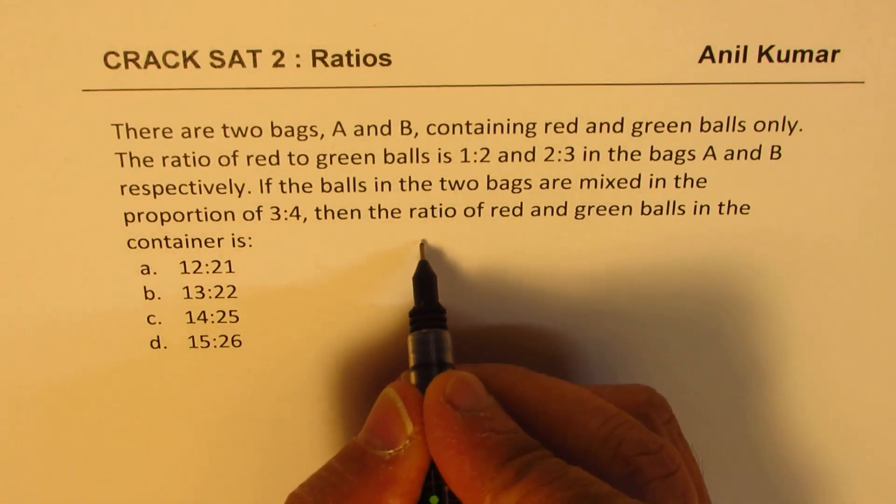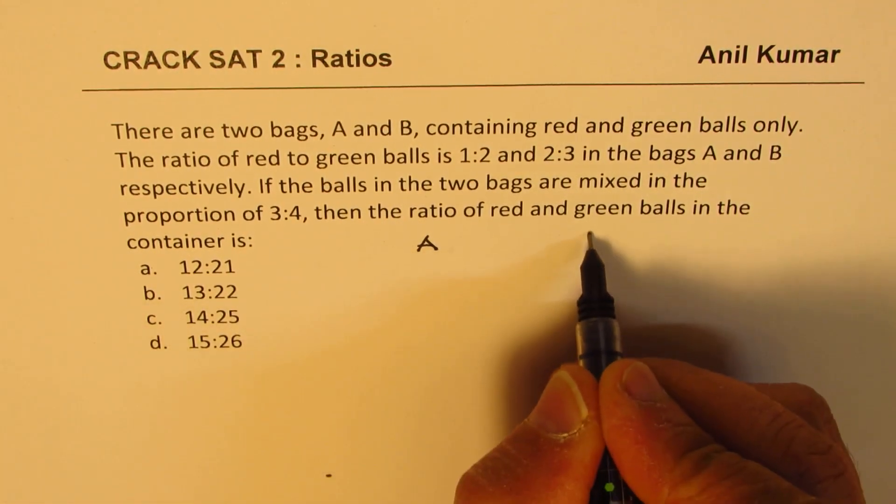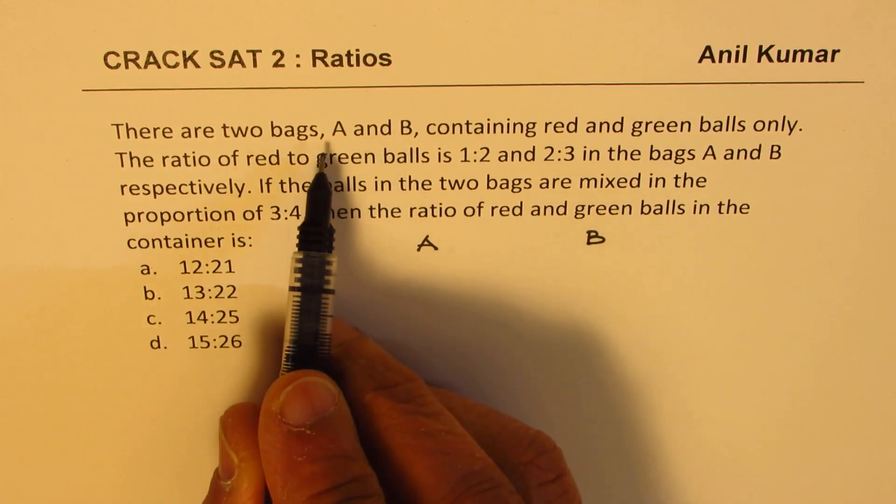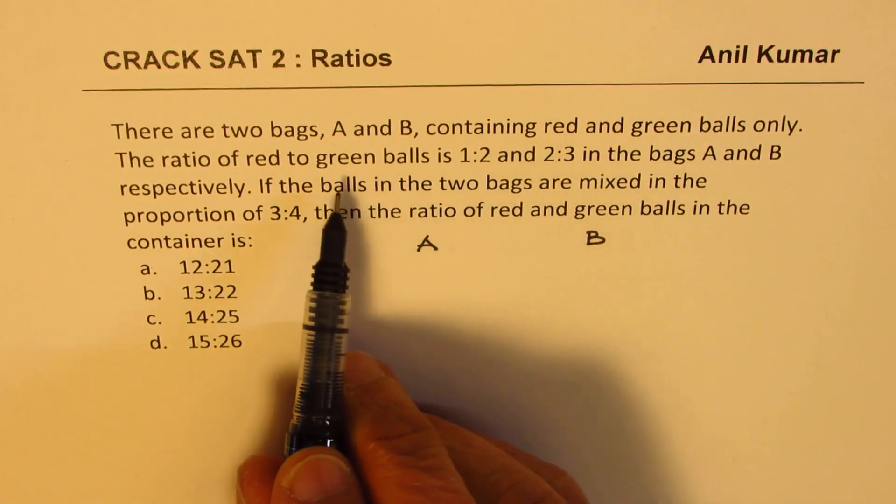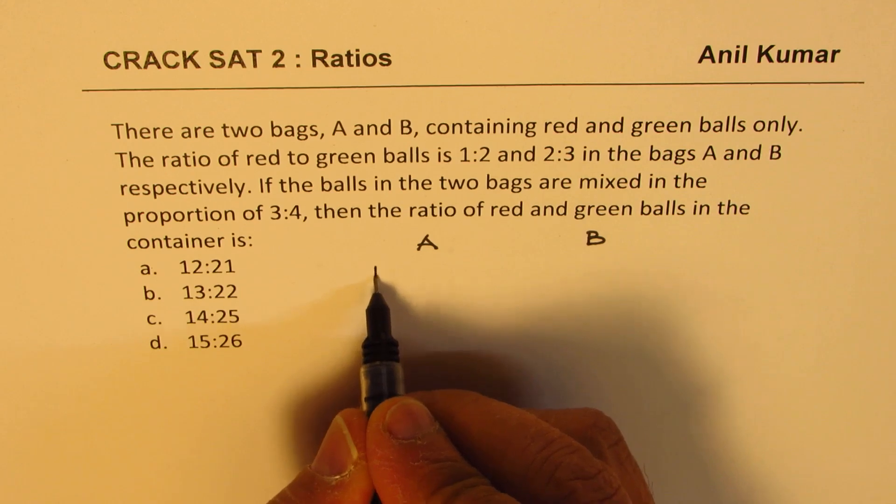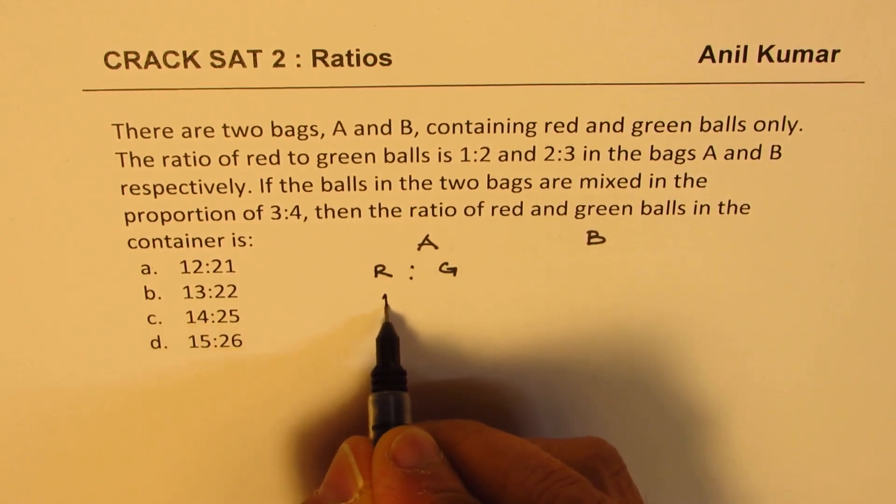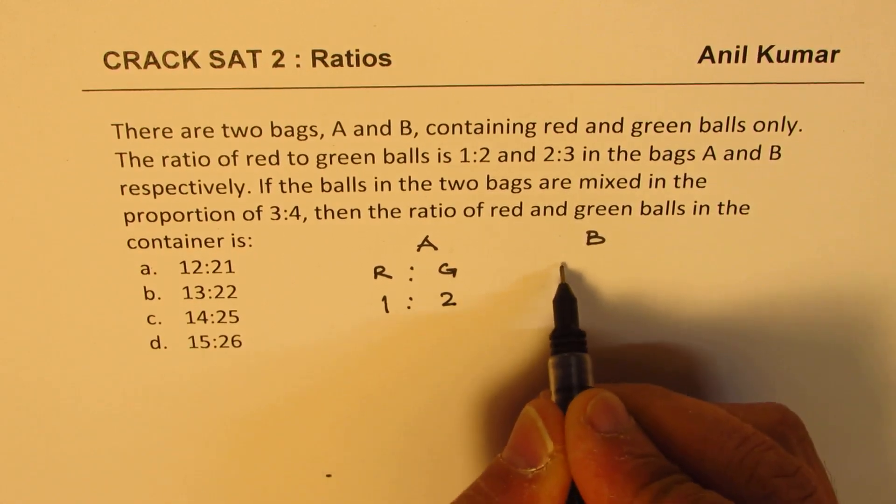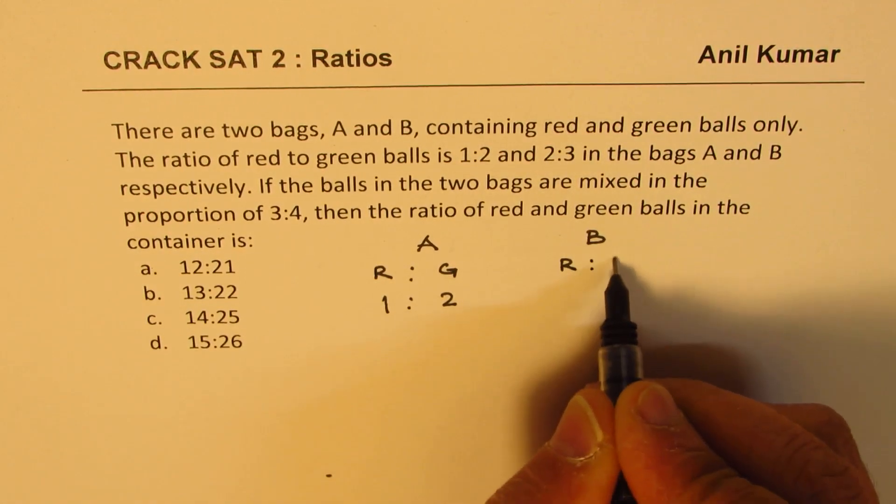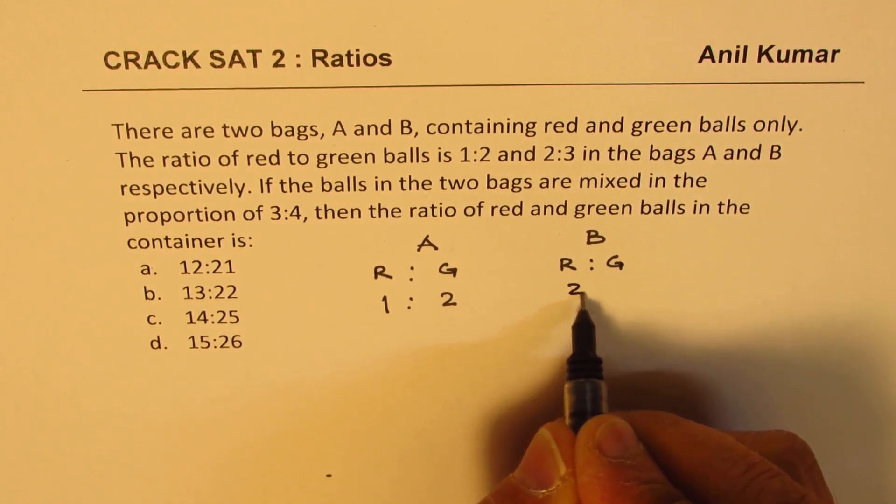Let's try to understand. There are two bags right, and these bags are called bags A and B for us. In the first bag, the ratio of red to green ball, let's say R for red and G for green, the ratio for red to green ball is 1 is to 2 and in bag B, the ratio of red to green ball is 2 is to 3.